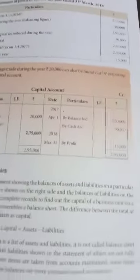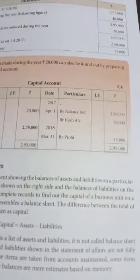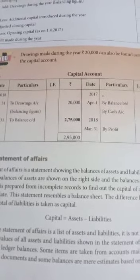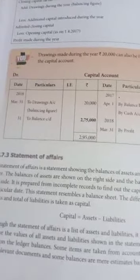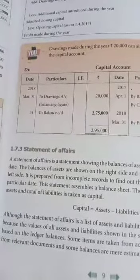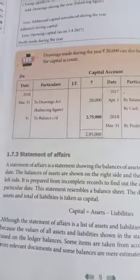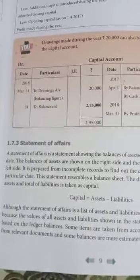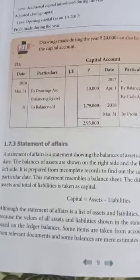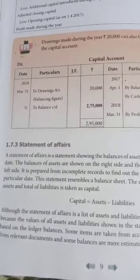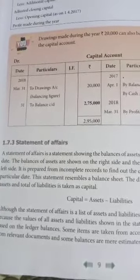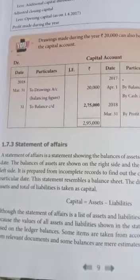The Statement of Affairs is a list of assets and liabilities. It is not called a balance sheet. The value of all assets and liabilities shown in the Statement of Affairs is not fully based on the ledger balance. It is a list of assets and liabilities.